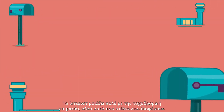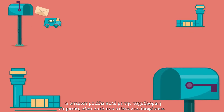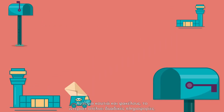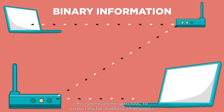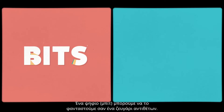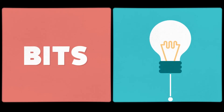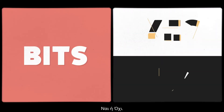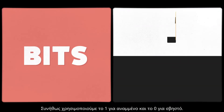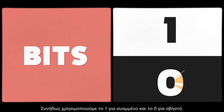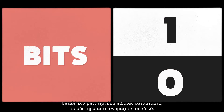The internet is a lot like the Postal Service, but the physical stuff that gets sent is a little bit different. Instead of boxes and envelopes, the internet ships binary information. Information is made of bits. A bit can be described as any pair of opposites — on or off, yes or no. We typically use a one meaning on or a zero meaning off. Because a bit has two possible states, we call it binary code.